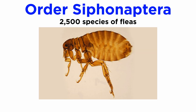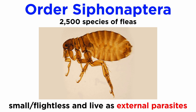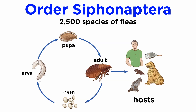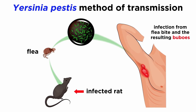Members of order Siphonaptera are commonly known as fleas, though they are likely to have been derived from Mecoptera and may not be a separate order. Regardless, there are about 2,500 species of fleas, all of which are small, flightless insects that live as external parasites on mammals and birds. Most adults grow to less than 3 millimeters in size and have laterally compressed bodies and legs adapted for leaping. They go through complete metamorphosis, and their larvae are worm-like with no limbs, using chewing mouthparts to feed on organic debris upon the host's skin. They are infamous vectors for disease, and the oriental rat flea is a vector for Yersinia pestis, the bacterium that causes bubonic plague.